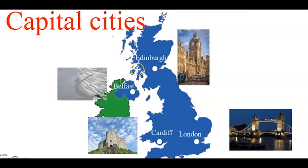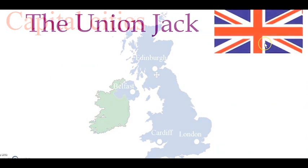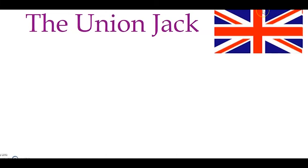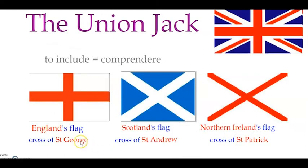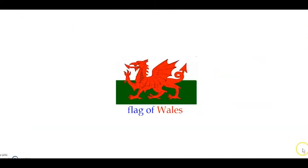The capital city of Northern Ireland is Belfast. The flag of the UK is called the Union Jack and includes the crosses of St George, St Andrew, and St Patrick. Its colors are blue, red, and white. The flag of Wales is white and green with a red dragon. That's all for today — see you next time, take care!